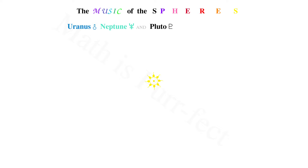Now let's recapitulate the music of all of the spheres. Recall that in the time of Pythagoras, the only planets known were Saturn, Jupiter, Mars, Sun, Venus, Mercury, and the Moon. However, all of the planetary tones, ancient and new, are extremely powerful, so please take care with them.